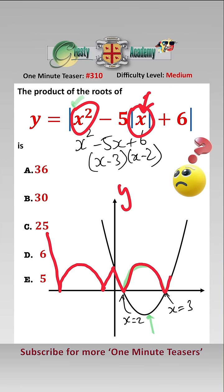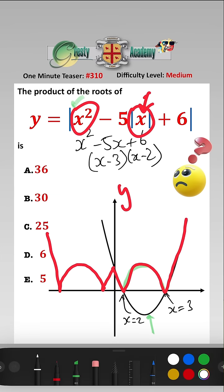So there we go. There is our new graph. And we can see therefore, just changing back to black, that we have four roots.